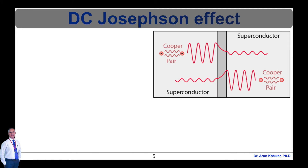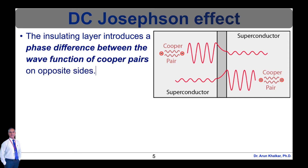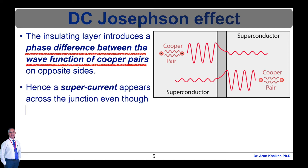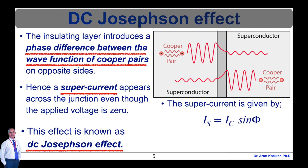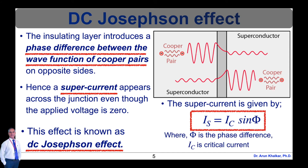In DC Josephson effect, the Cooper pairs tunnel easily through the barrier, i.e. insulating layer, as a single unit. The Cooper pairs can be represented by a wave function which is the same for all pairs. The insulating layer introduces a phase difference between the wave function of Cooper pairs on opposite sides. Due to this, a supercurrent appears across the junction even though the applied voltage is zero. This effect is known as DC Josephson effect. The supercurrent through the junction is given by Is = Ic·sin(φ), where φ is the phase difference between the wave functions describing Cooper pairs and Ic is the critical current at zero voltage condition. The behavior of Cooper pairs through superconductor-insulator-superconductor is shown in this diagram.